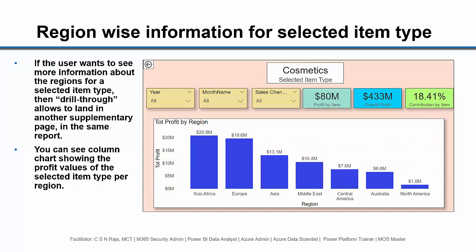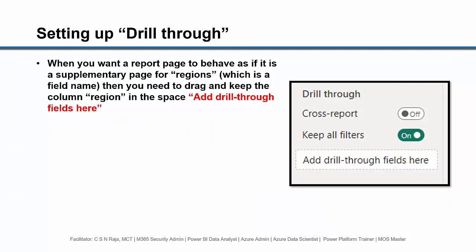You can see a column chart showing the profit values of the selected item type per region. Additional filters via slicers can also be applied. When you want a report page to behave as if it is a supplementary page for regions, which is a field name, then you need to drag and keep the column region in this space — add drill through fields here — which you can see in the image.